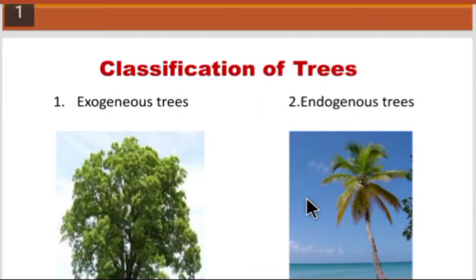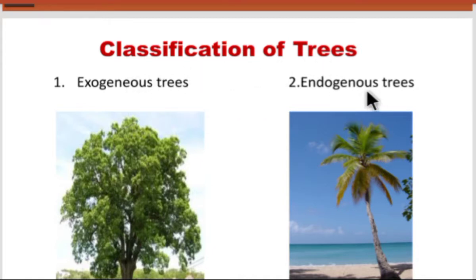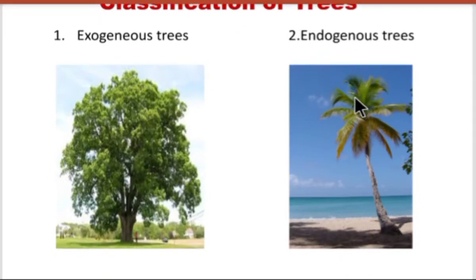First is classification of trees. Depending upon the growth of the trees, the trees are classified into two categories: one is exogenous trees and the second one is endogenous trees.